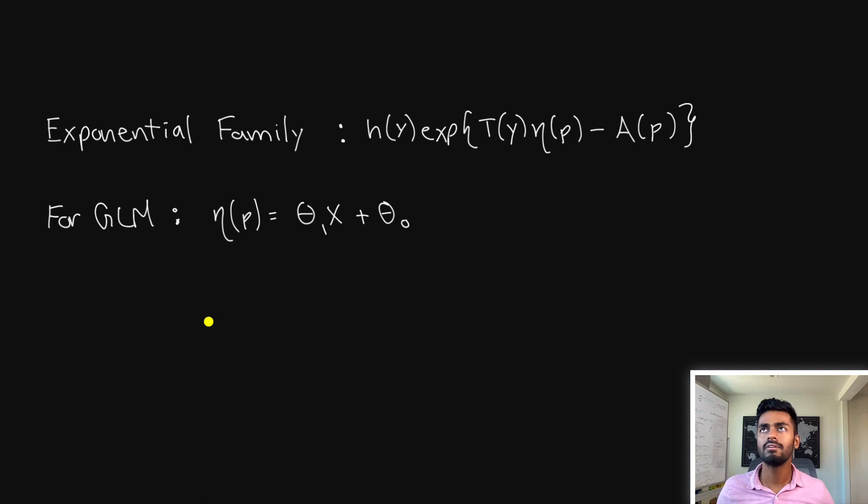From this section, now we're going to get a little more into the weeds of why exactly we use sigmoid function in logistic regression. So here is the general form of the exponential family of distributions, where we have h and t, which are functions of the response variable y. And then we have this eta and a, which are functions of the Bernoulli parameter probability of success, which I've called p. Now, this in general can be different for different types of distributions. So for the normal distribution, this p would be the vector of mean and variance.